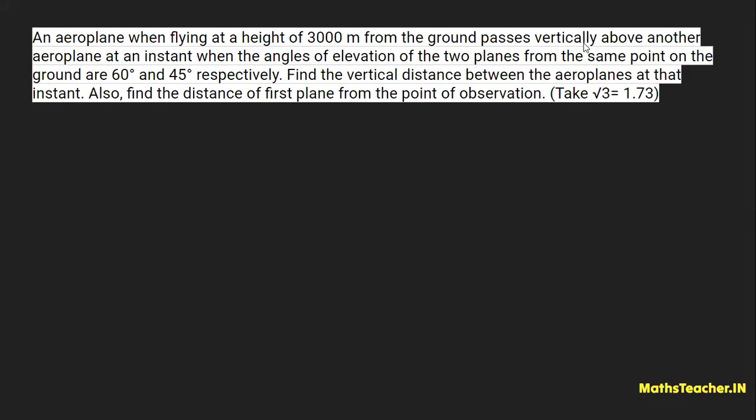Hello students, here we have another question. Let's read it: an aeroplane when flying at a height of 3000 meters from the ground passes vertically above another aeroplane at an instant when the angles of elevation of the two planes from the same point on the ground are 60 degrees and 45 degrees respectively. The language is a little difficult but we will try to understand it properly — try to understand the question first, because if you don't understand it you won't be able to draw the correct figure.